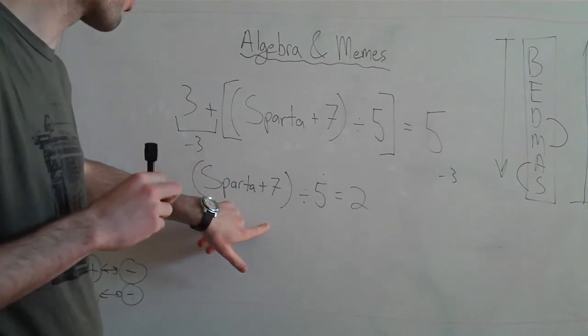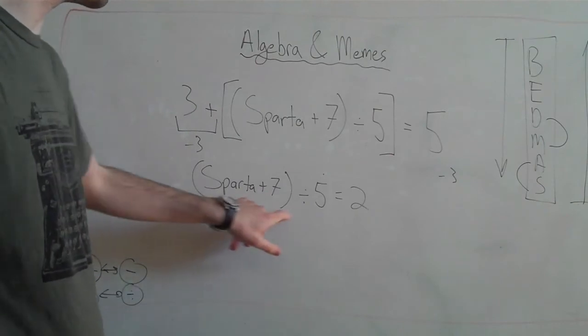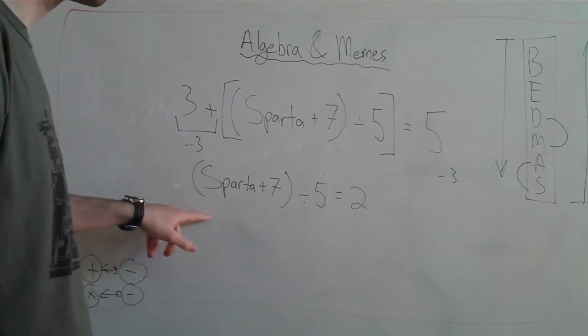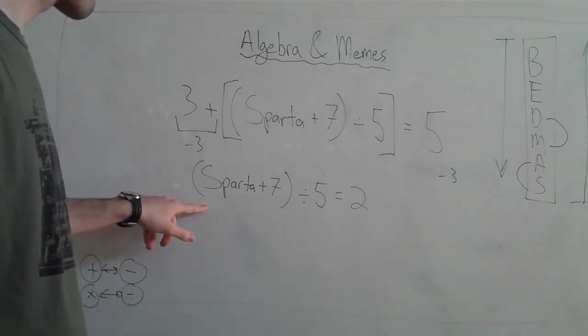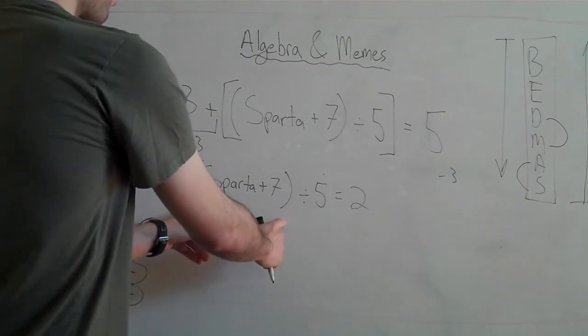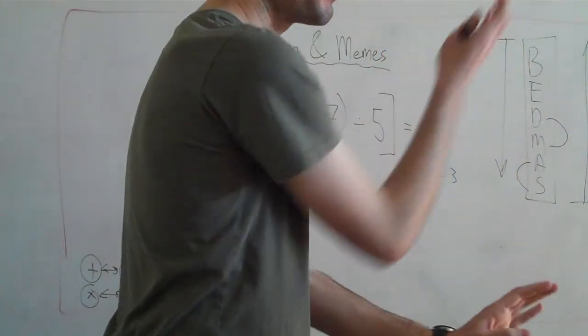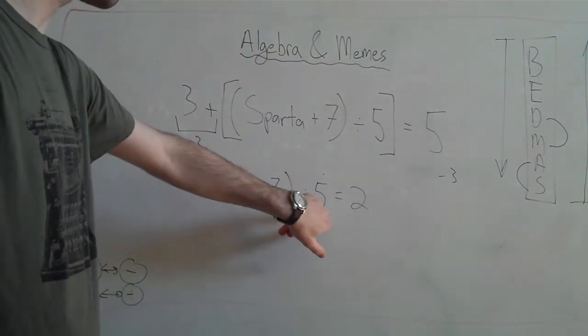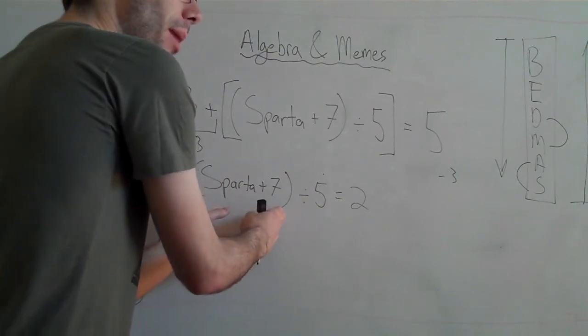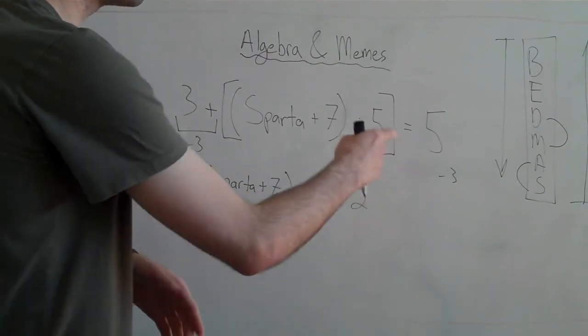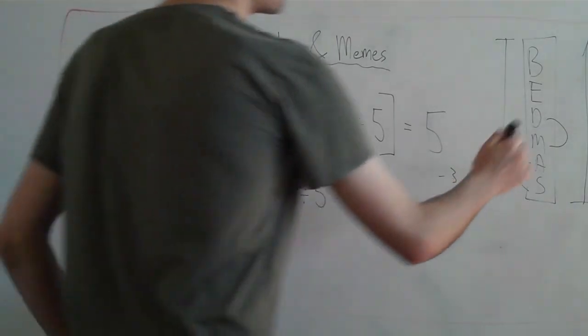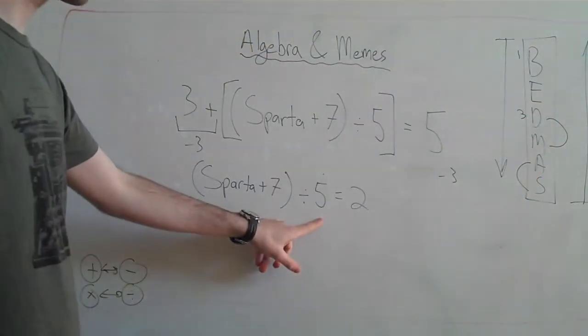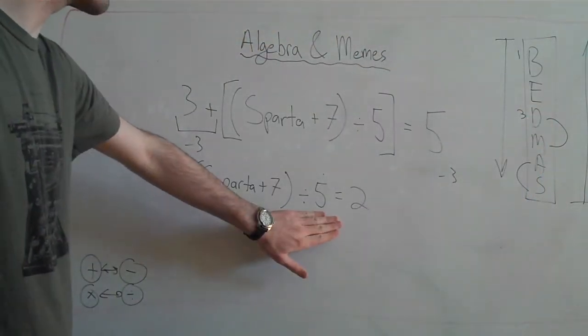In BEDMAS, what would you normally do for this equation? What was the first thing you would do? Do the addition. So 2 plus 7. Because it's in the brackets. But we're flipping BEDMAS upside down to solve algebra equations. What about divided by 5? That's the next thing we're going to do. Normally, we would do inside the brackets. But for algebra, we're going to do the last thing we would normally do for BEDMAS. The last thing is outside the brackets. Brackets is number 1. Division is all the way down here at number 3. Nope, plus 7 is inside the brackets.